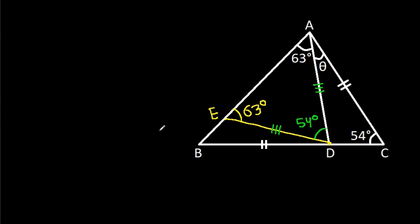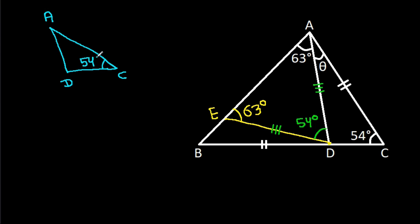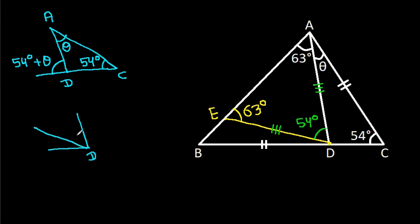Now, in triangle ACD, angle ACD is 54 degrees and angle CAD is theta, so this exterior angle at D will be 54 degrees plus theta.